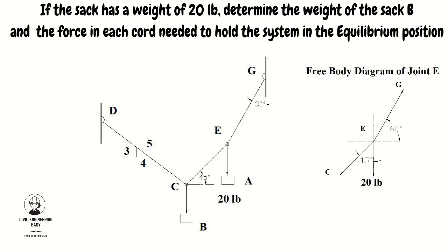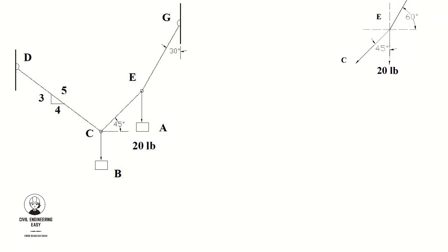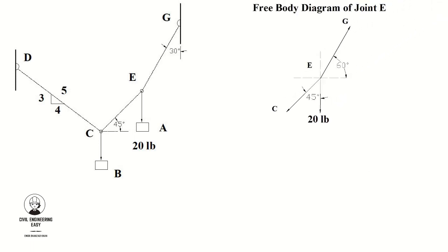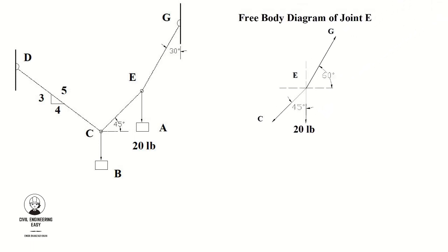It is not a hard and fast rule to set the direction of the arrow — it's up to you to set the direction by your own choice, but later if your assumed solution is negative, change the direction of the arrow. At joint E, there is one vertical force having a 20-pound magnitude applied downward.